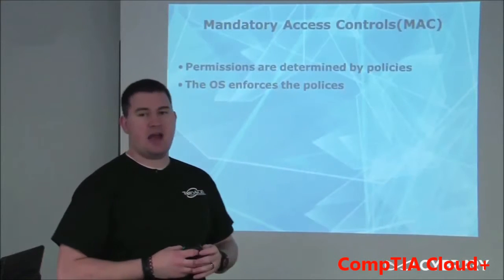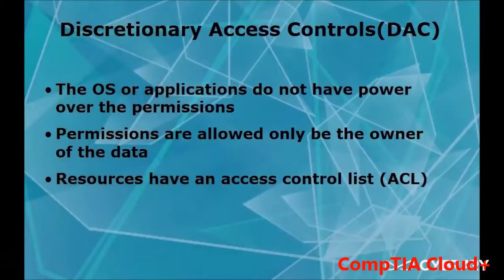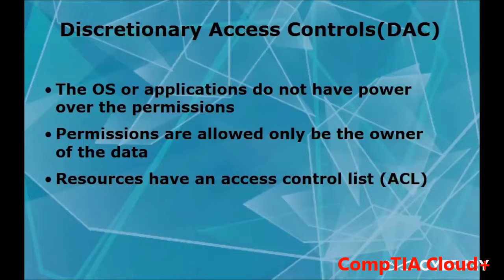Discretionary access control is determined by the user — the owner — who says only they can access a particular file or folder. The owner manages the permissions for this access control. It is not controlled by the operating system, policies, or groups — it's controlled by the owner. These are called access control lists, which are simply lists of who has access to the resources.